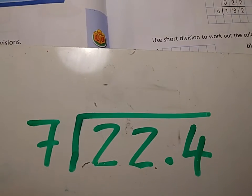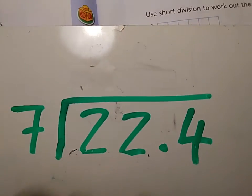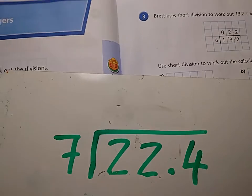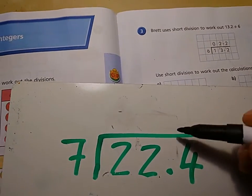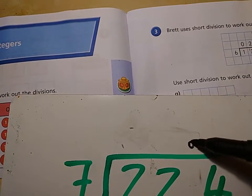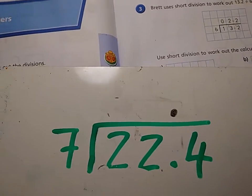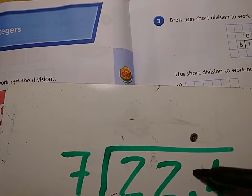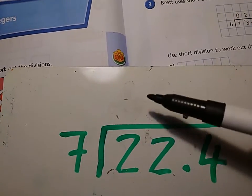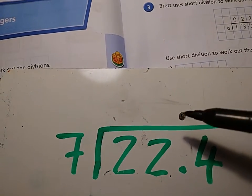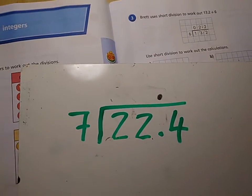22.4 divided by 7. The first thing you have to do, always with these decimal questions, is put the decimal in first. I'm not even going to bother doing anything else. And it always is in line. So the decimal's never going to end up here or over here, the decimal's always in the same place. And then short division.